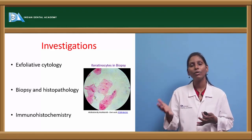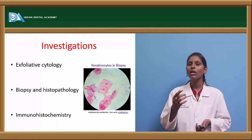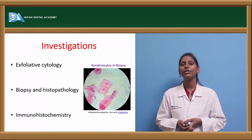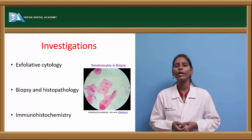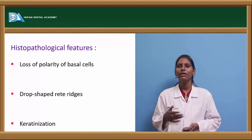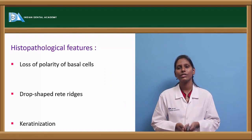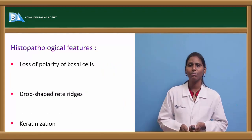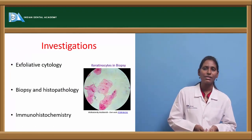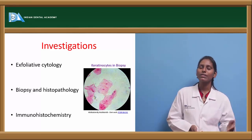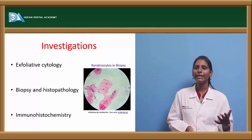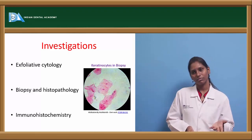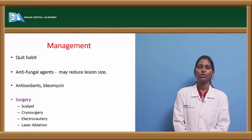Then biopsy: if the lesion is small, we can do an excisional biopsy. If it is a large lesion, we do an incisional biopsy and check for histopathology, where we can see various histopathological features like keratinization, drop-shape rete pegs, and loss of polarity of basal cells. Immunohistochemistry at the higher end can give us the variant of leukoplakia.